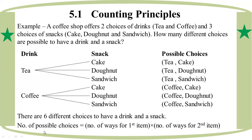The number of possible choices — the number of ways for the first item multiplied by the number of ways for the second item gives the total number of possible outcomes.